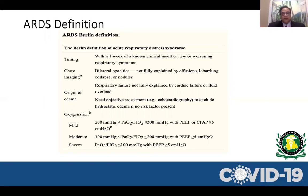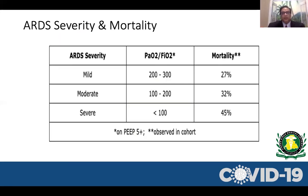Definition-wise, it should be an acute process within one week. Patients should have bilateral infiltrates and should not have any evidence of cardiac failure, which can be assessed by echocardiogram, PA catheter, clinical judgment, or BNP. Mild ARDS has a P/F ratio between 200 and 300 with PEEP or CPAP of 5. Moderate is between 100 and 200. Severe is less than 100 mmHg with PEEP of 5. Mortality differs: mild ARDS around 27%, moderate 32%, and severe ARDS 45%.